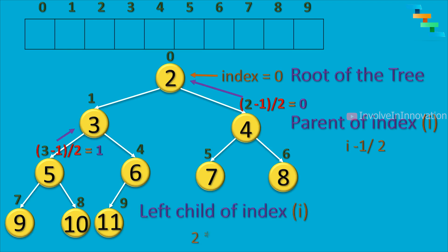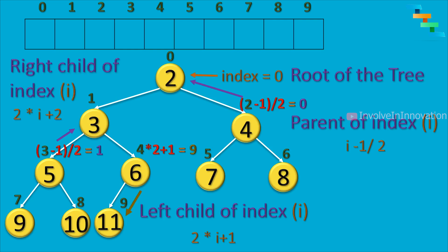The left child for the element at index i is at index (2 * i + 1). So for the element at index 4, the left child is at index (2 * 4 + 1) = 9. The right child for the element at index i is at index (2 * i + 2). So for the element at index 1, the right child is at index (2 * 1 + 2) = 4. We have now seen how to find the immediate parent, left child, and right child of a node.